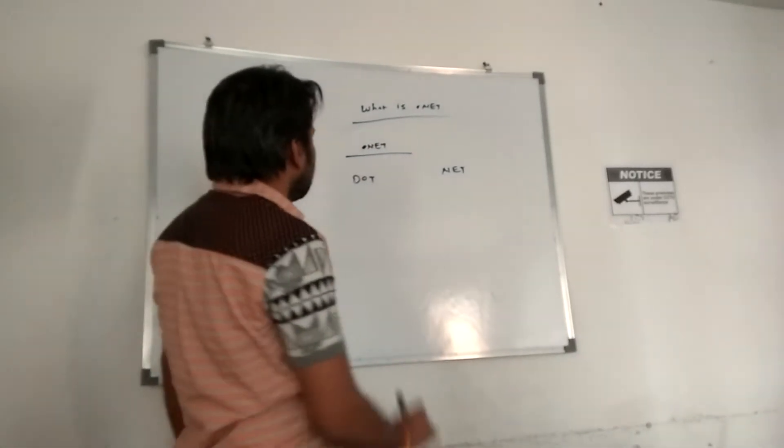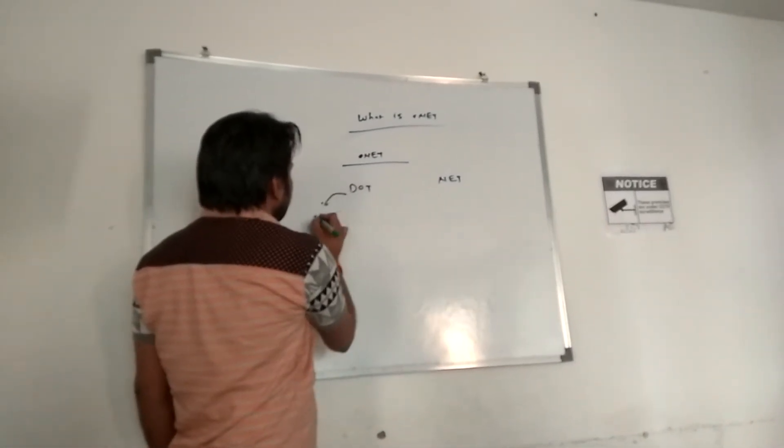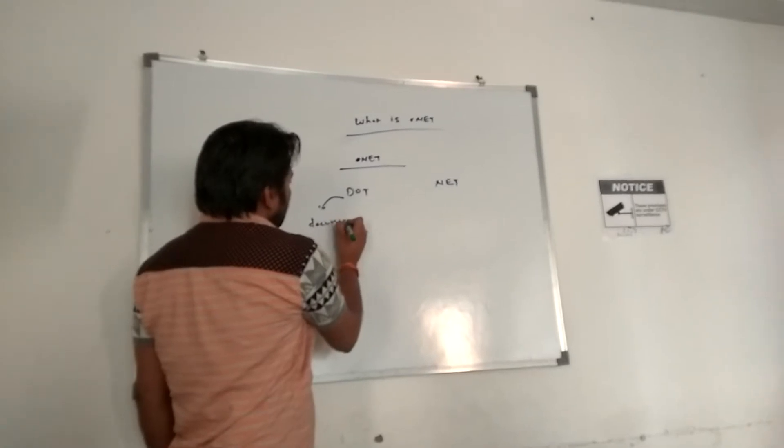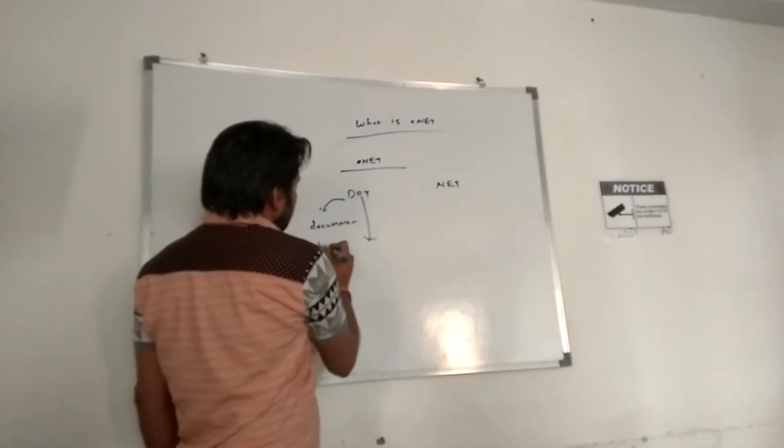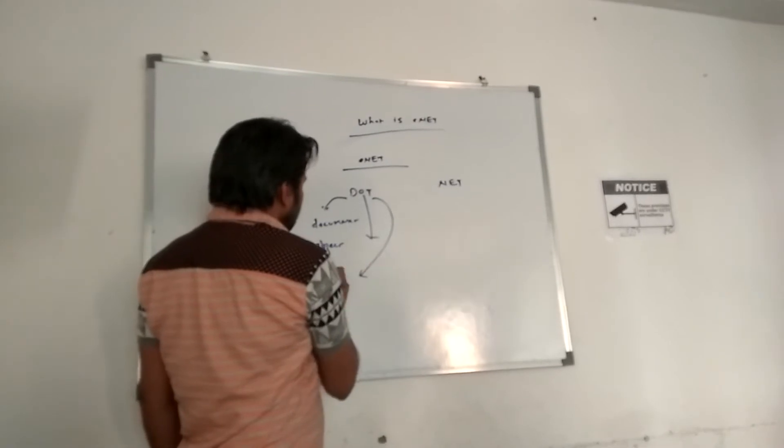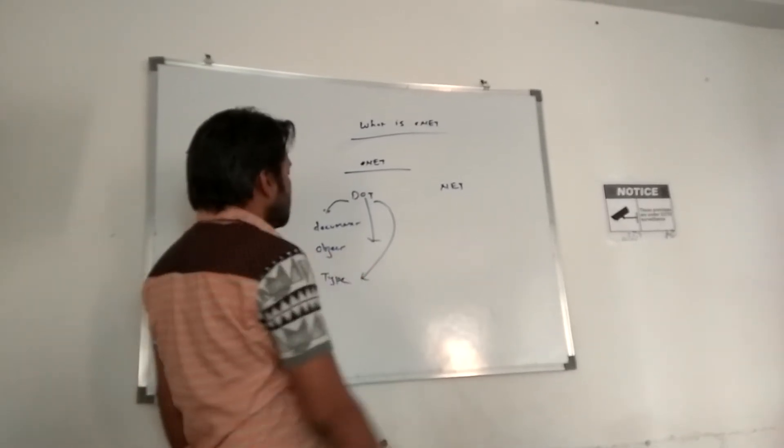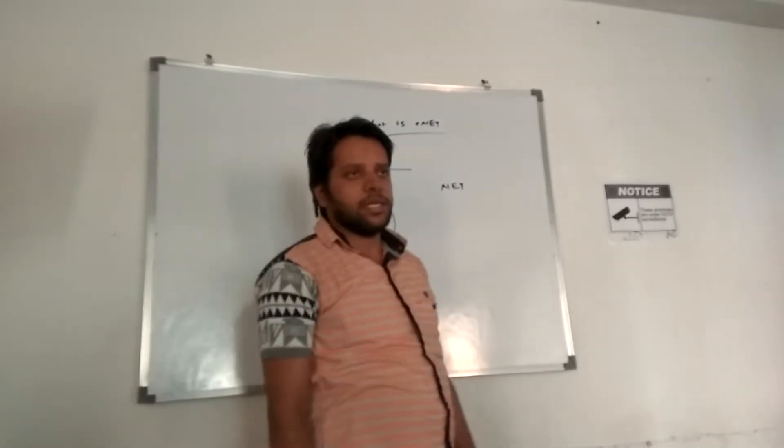.NET means D means document, O means object, and T means telling. Document, object, telling.